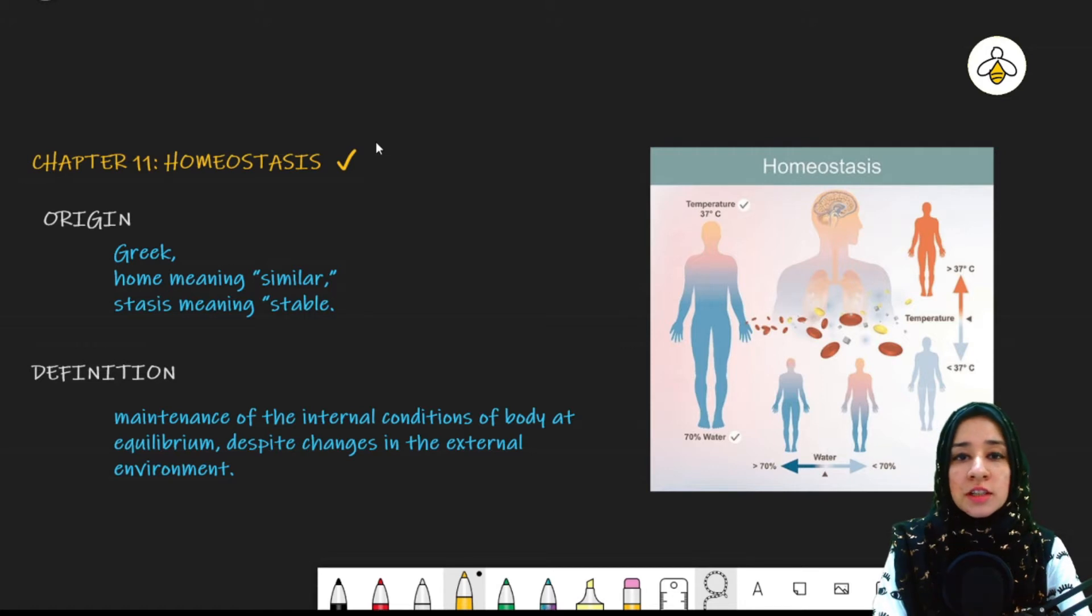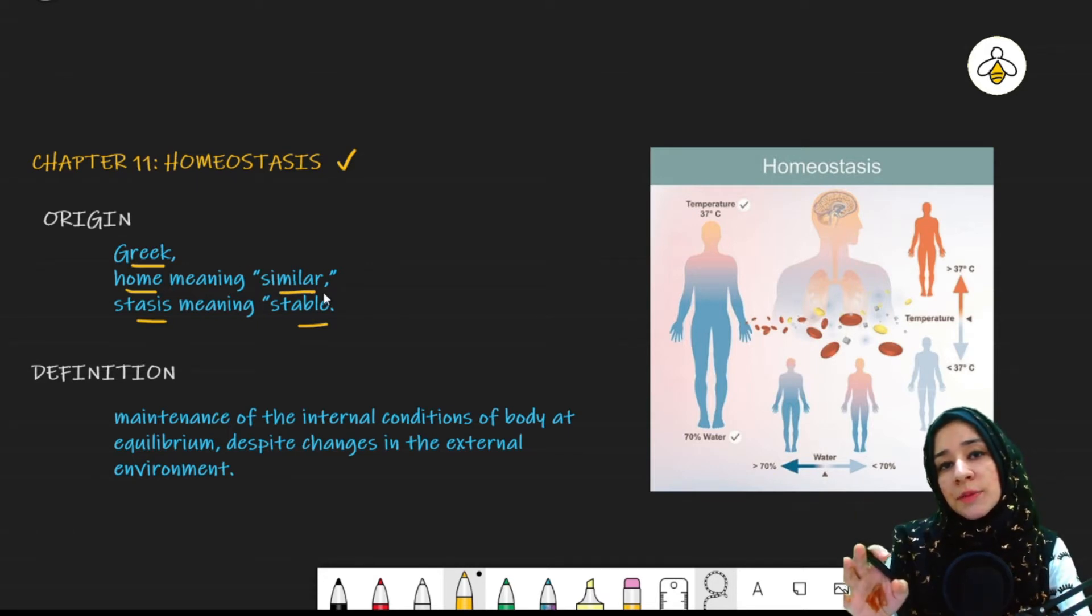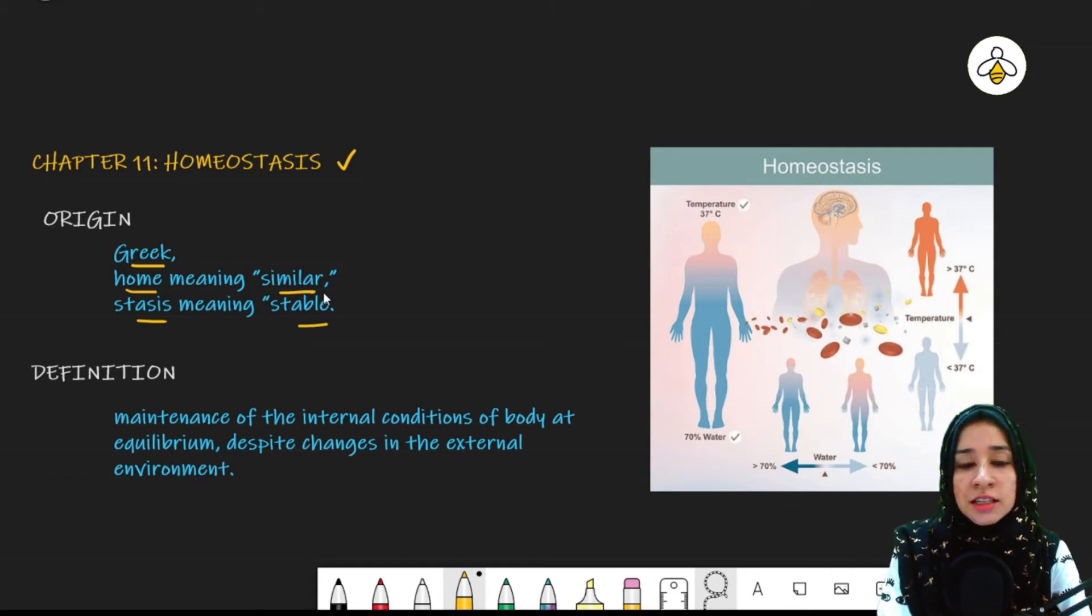So the first thing that we need to understand is what is the meaning of homeostasis. It is originated from a Greek word home meaning similar, whereas stasis meaning stable. So in short, we can say that homeostasis is maintaining the internal condition of the body, irrespective of what changes are in the external environment. What is our internal condition, it is maintained at a static level. There is no change in it.